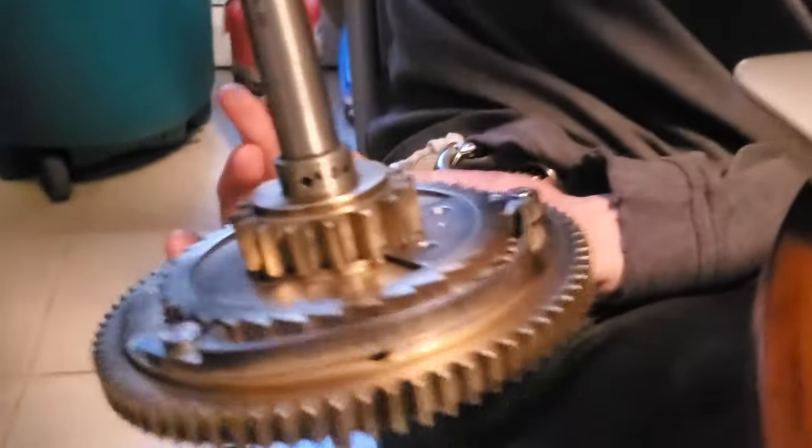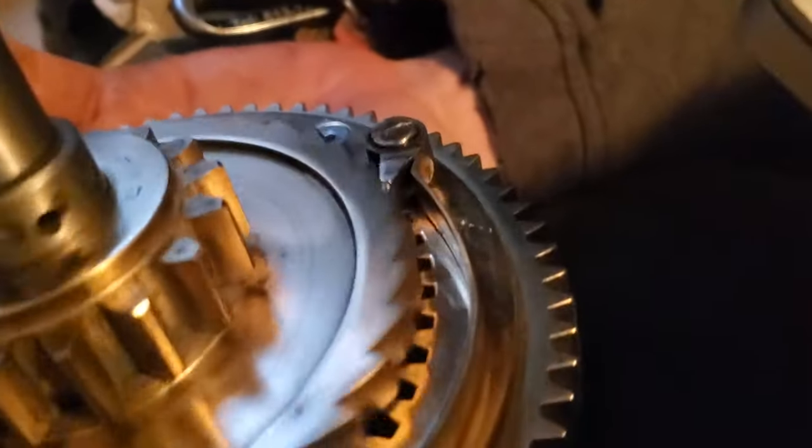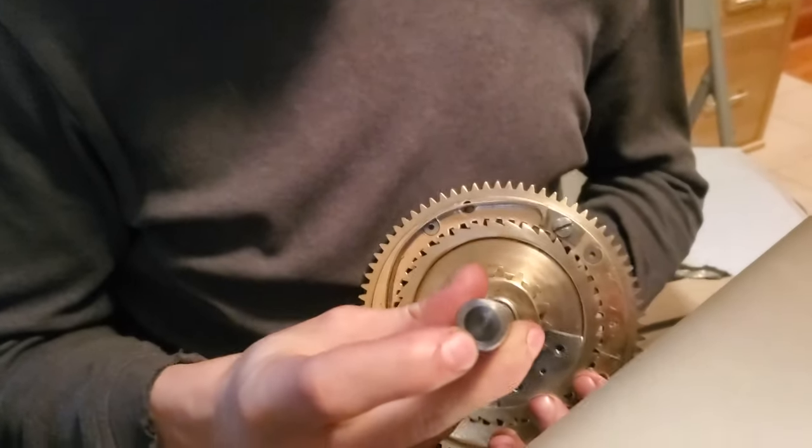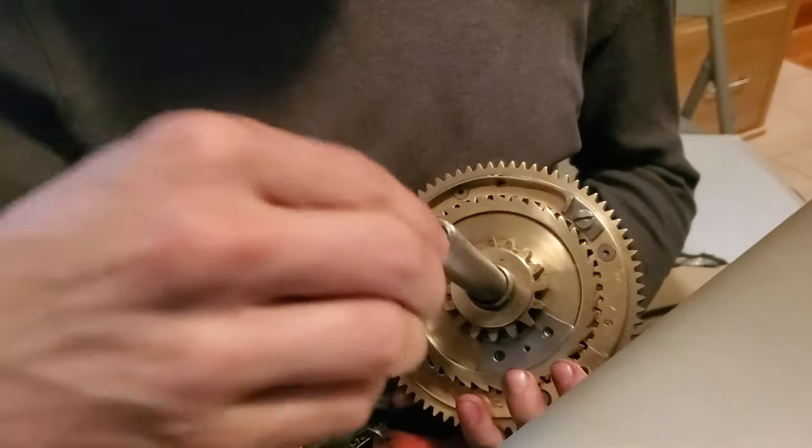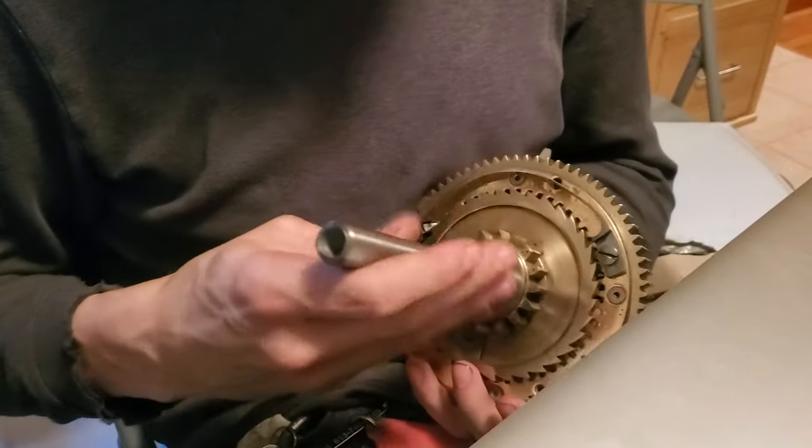The tooth latches up like it's supposed to, which it didn't do before. Remember that destroyed end where the crank goes? This is the first step in fixing that. There's going to be a new part press-fit in there with a cross pin which is going to have the new square on it for the crank.